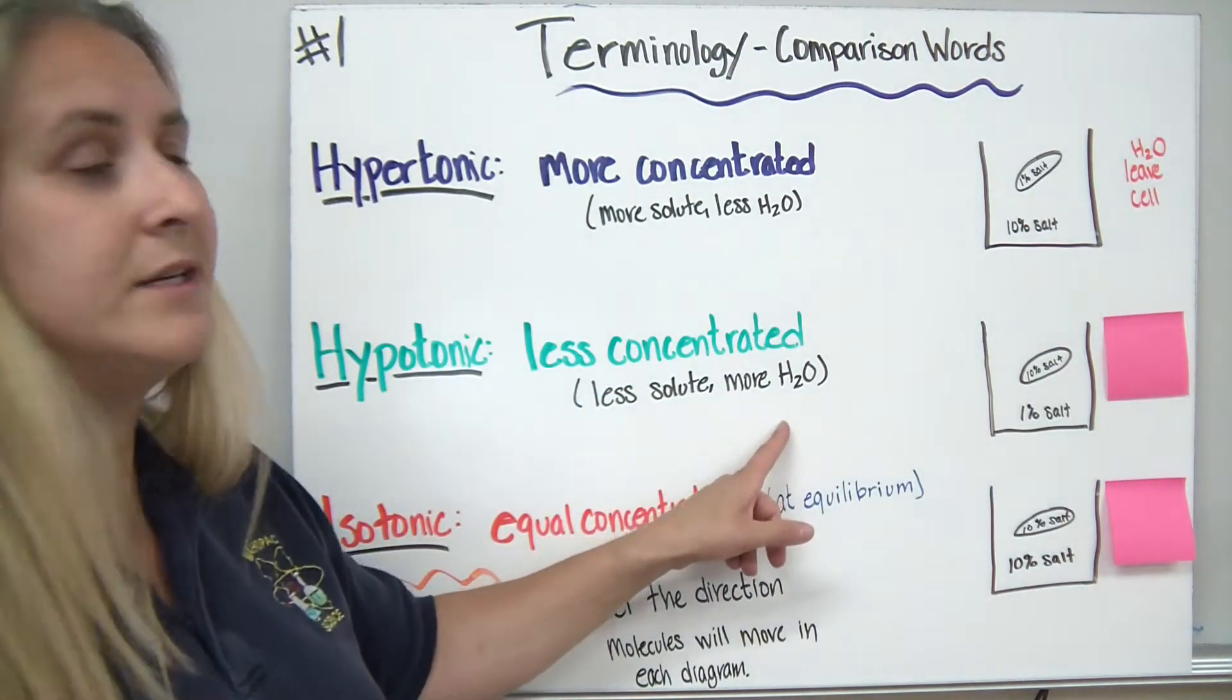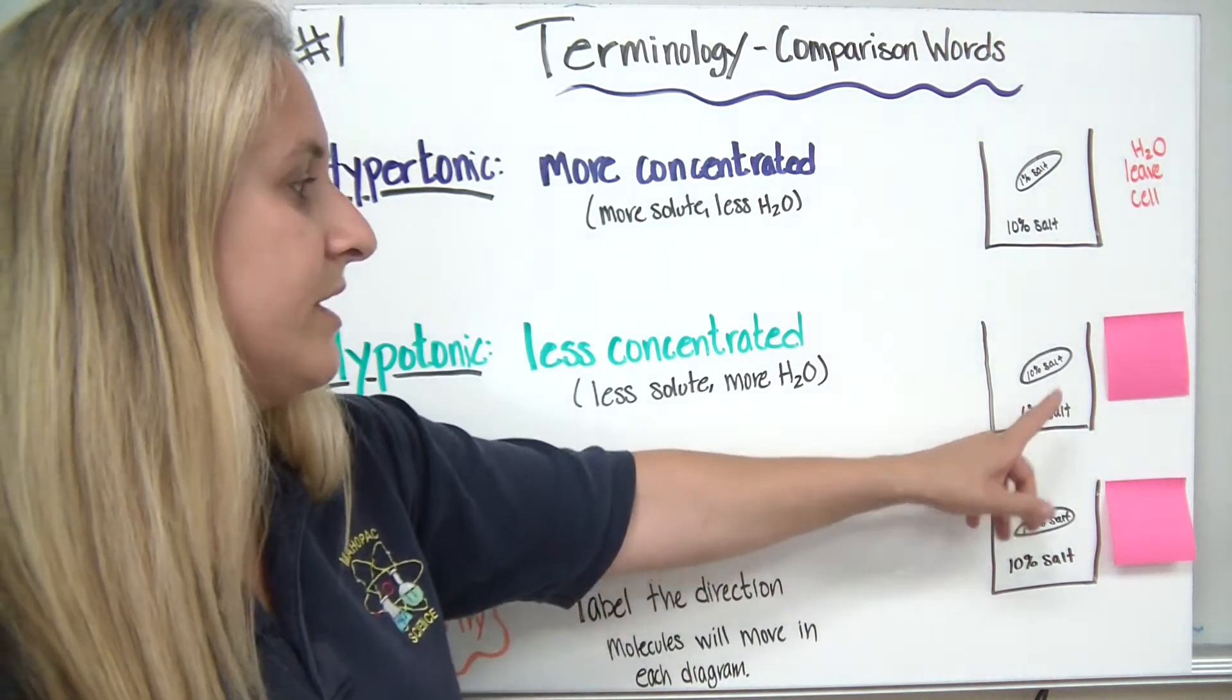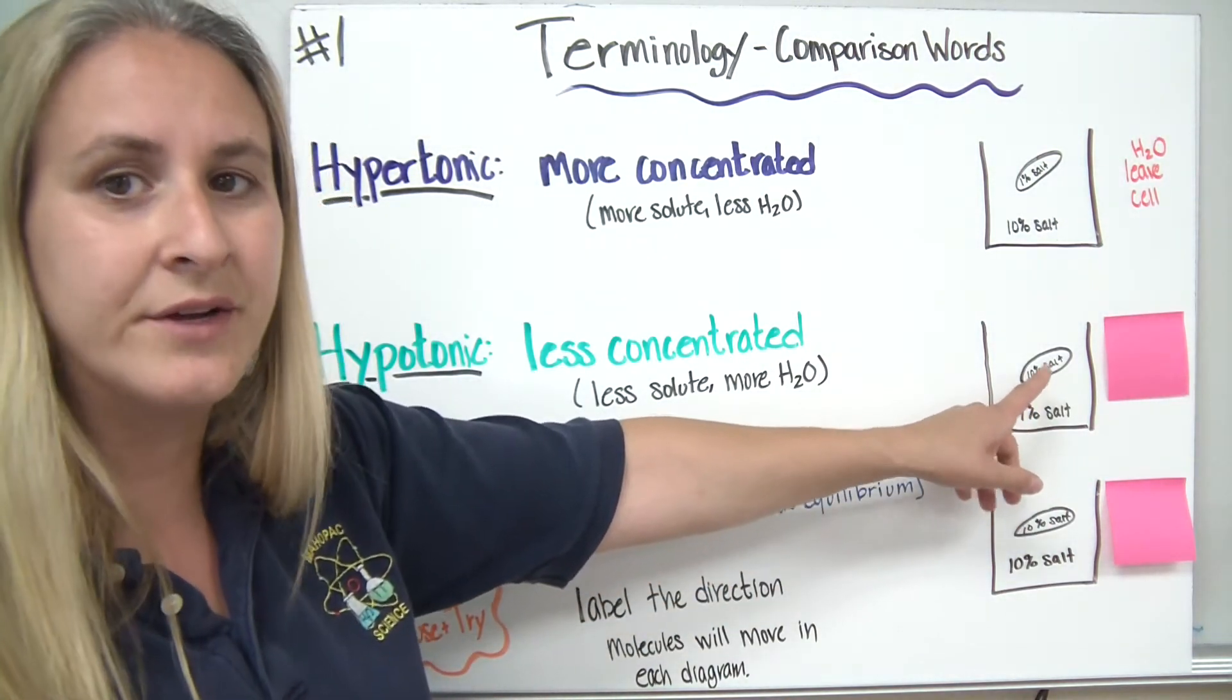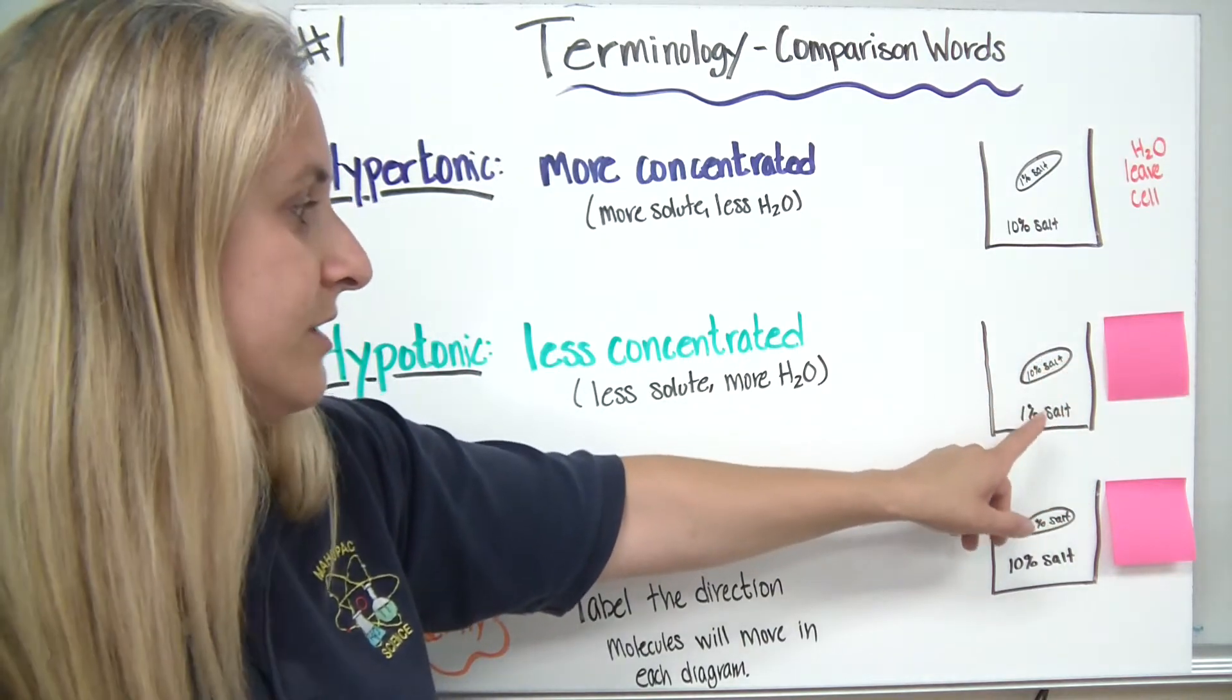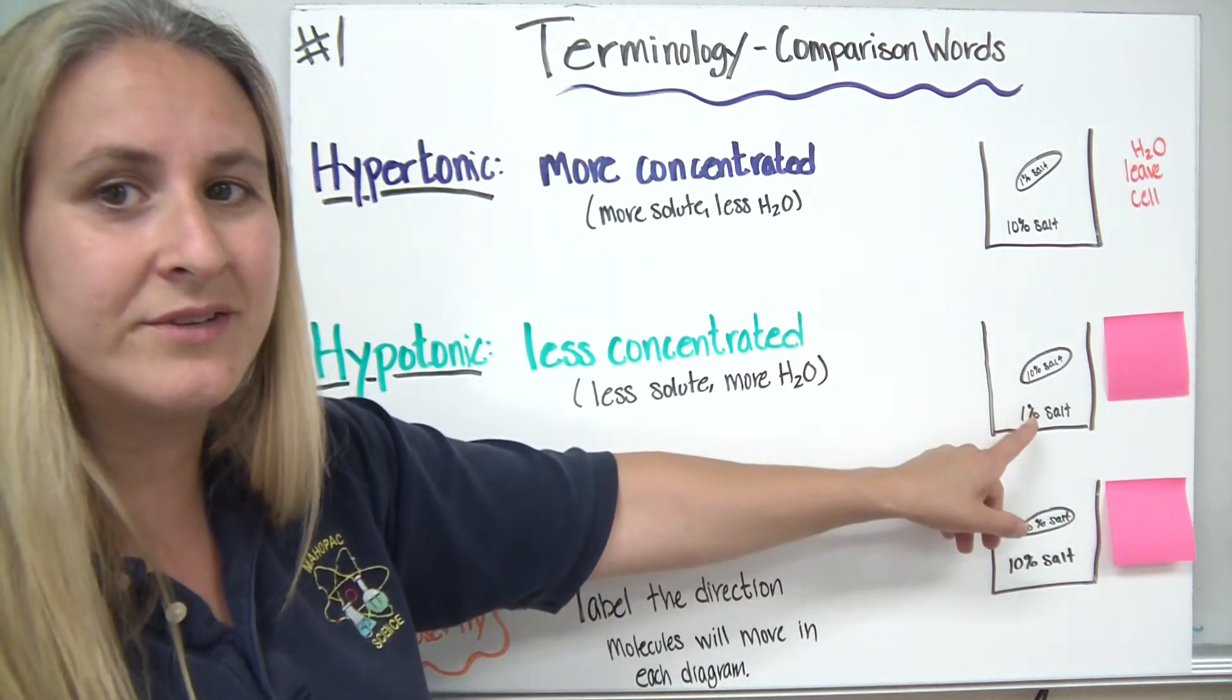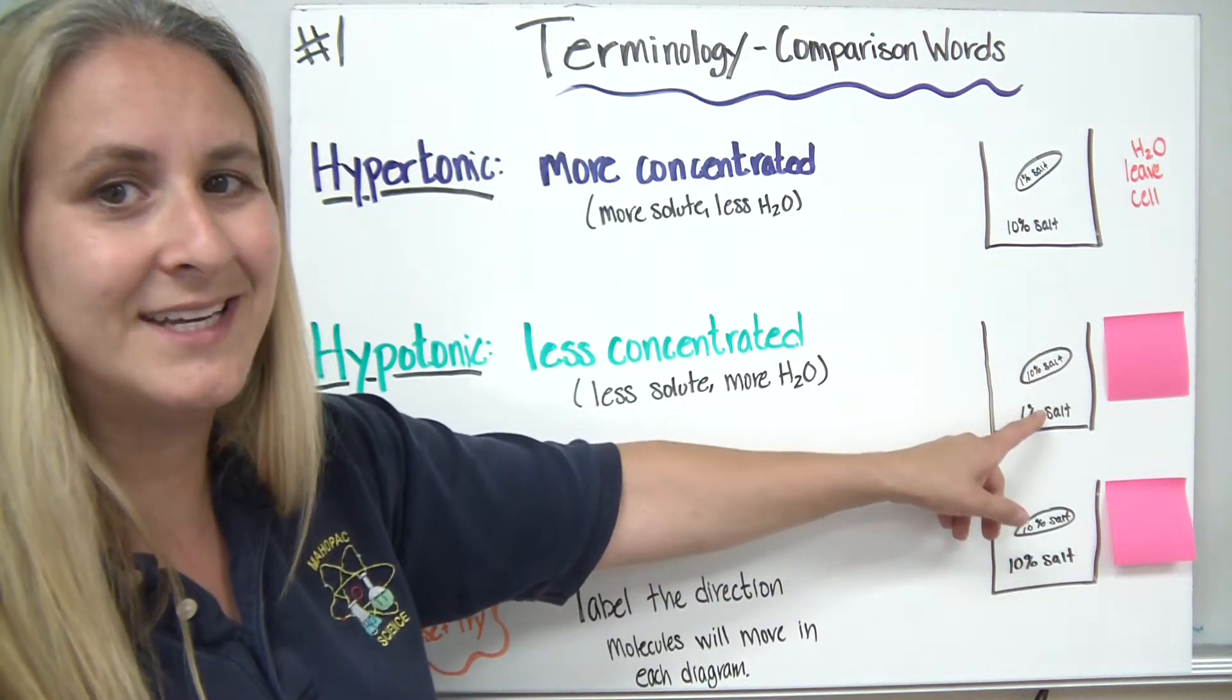In our second scenario that we have, we're putting it into what's called a hypotonic solution. So in this scenario, 10% salt would give us a 90% water solution. And a 1% salt would give us 99. So there's 90% water inside, 99 outside.